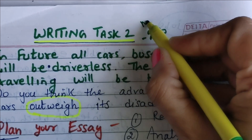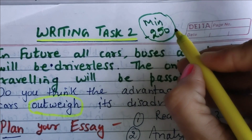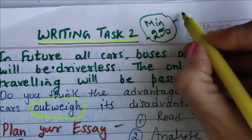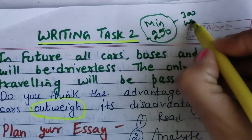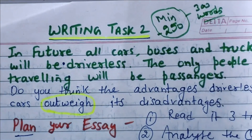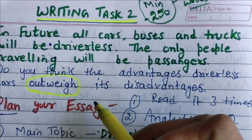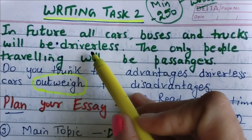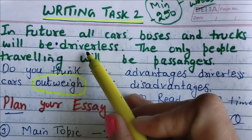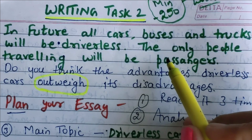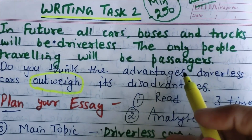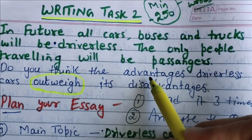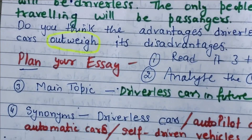The minimum word count is 250 words — not less than that. But if there is any mistake while writing, please write at least 300 words for the essay. Now let's look at the important keywords for which we need to find synonyms: driverless cars or vehicles, passengers, and the words advantages and disadvantages.